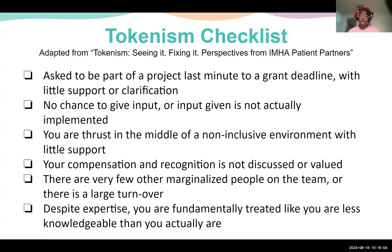Another sign of tokenism is having your compensation not discussed and not being recognized. If you work hard on a research project and find there's no mention of you in the paper — you're just referred to as an anonymous individual — and your compensation is not discussed or is shied away from. Another big tell is that there are very few other marginalized people on the team, or if there are, there is always turnover — people leaving and coming and leaving — usually because the environment isn't actually supportive. And despite your expertise, you are fundamentally treated as if you are less knowledgeable.